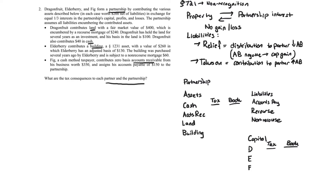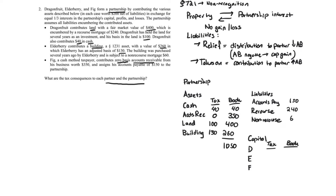Totaling the book amounts gives $1,050. The liabilities are: accounts payable $150, recourse liability $240, and non-recourse liability $60 — totaling $450. The book capital account therefore equals $1,050 minus $450, which is $600. Since each partner owns one-third, each partner's book capital account is $200.